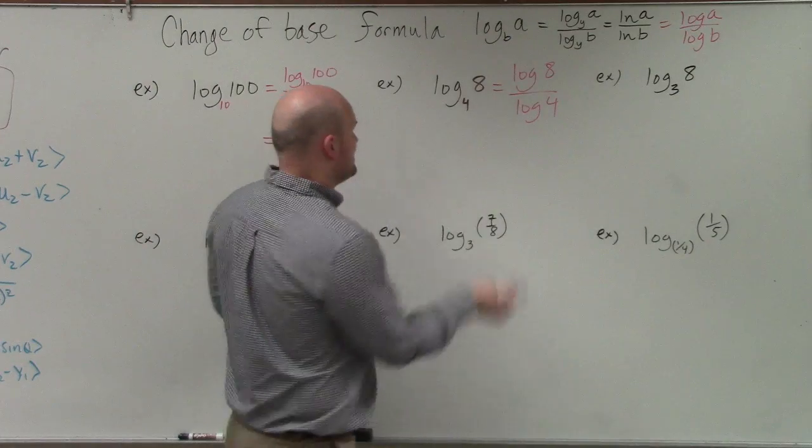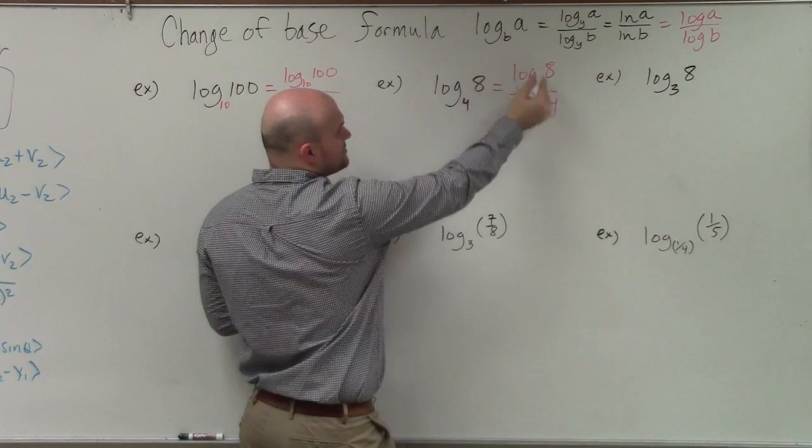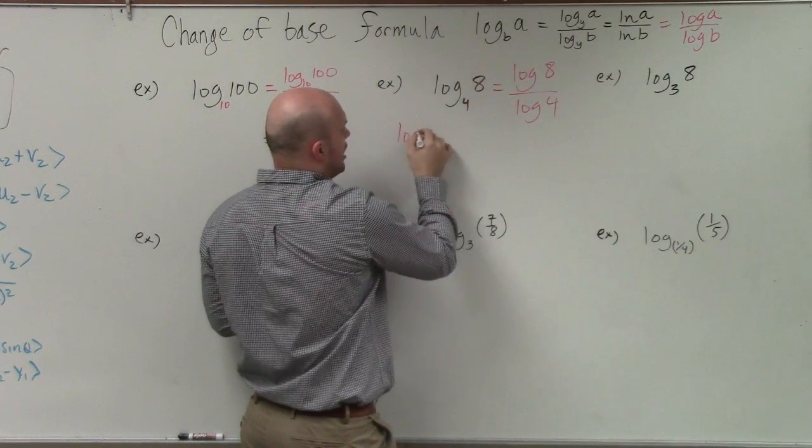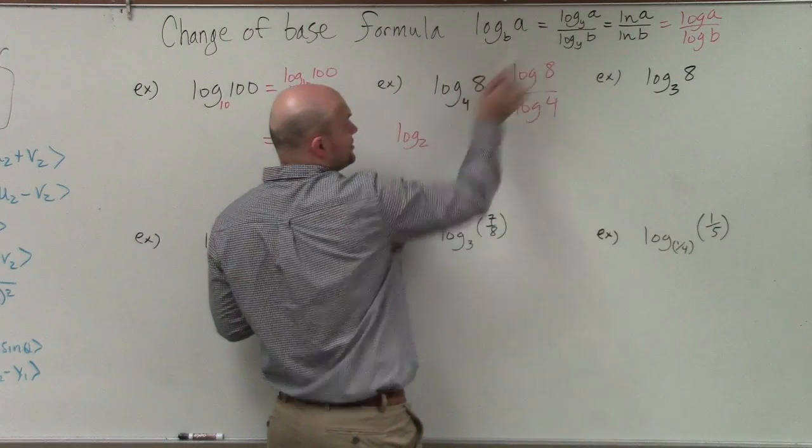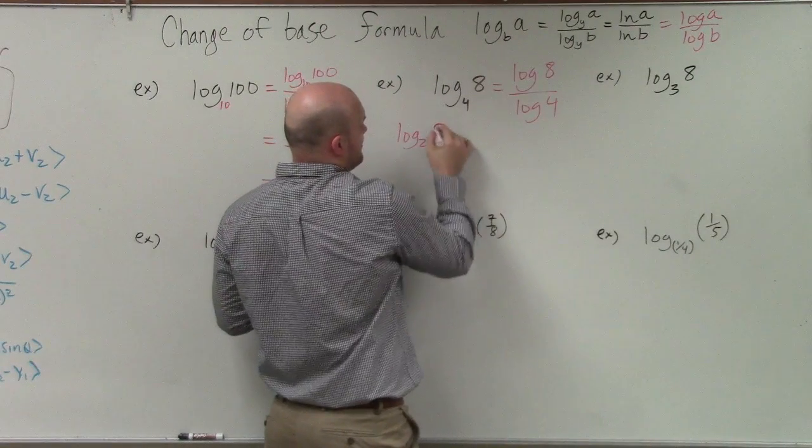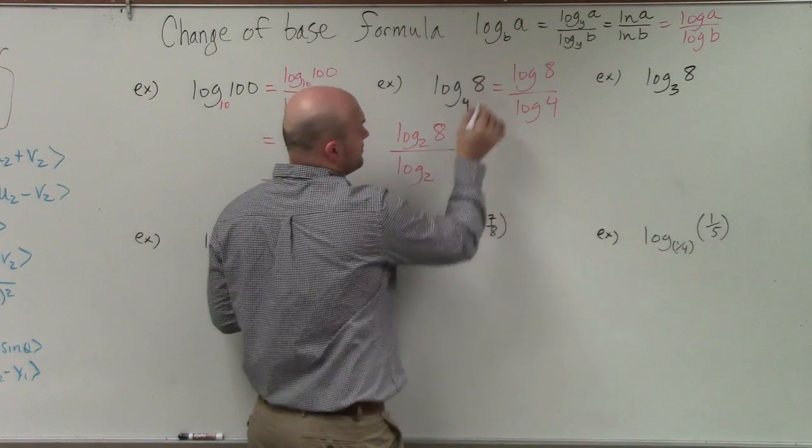However, I want to prove to you that this works. So if you were to look at this, instead of using log base 10, let's use log base 2. So therefore, to rewrite this, I'm going to have my y is going to be 2. So my a is 8. So it's log base 2 of 8 over log base 2 of 4.